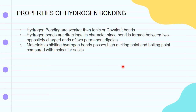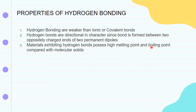The next topic is the properties of hydrogen bonding. Hydrogen bonds are weaker than ionic or covalent bonds. Hydrogen bonds are directional in character, since the bond is formed between two oppositely charged ends of two permanent dipoles.